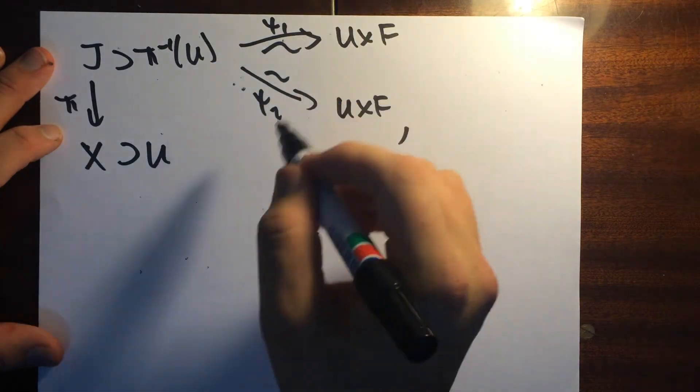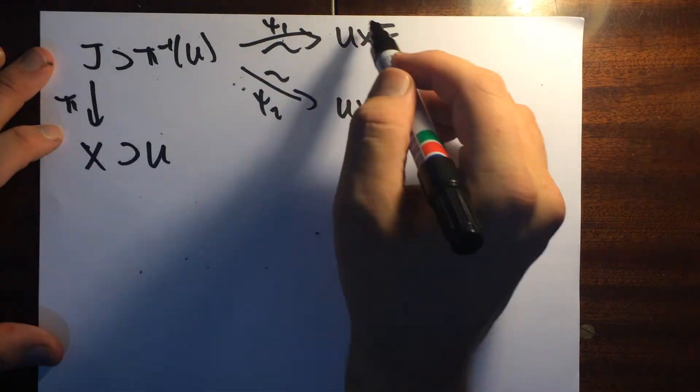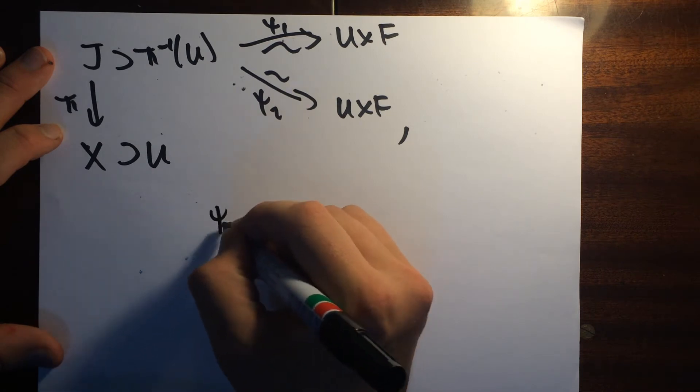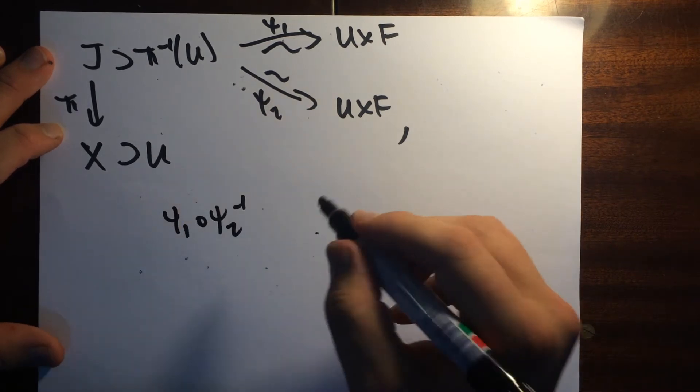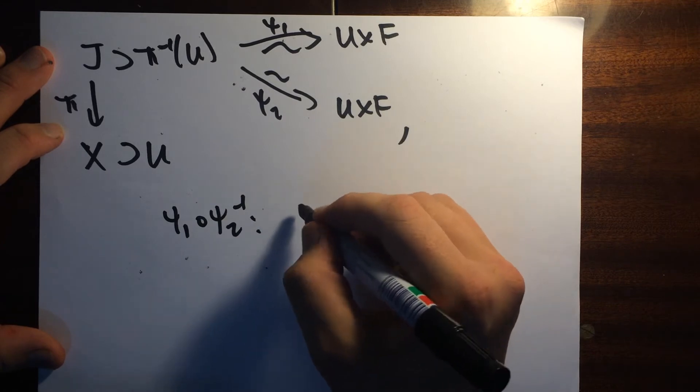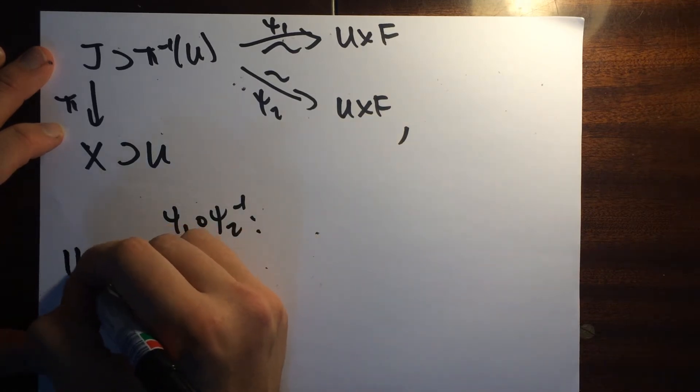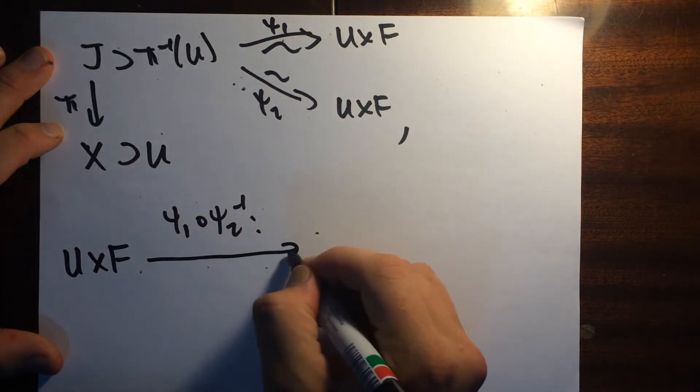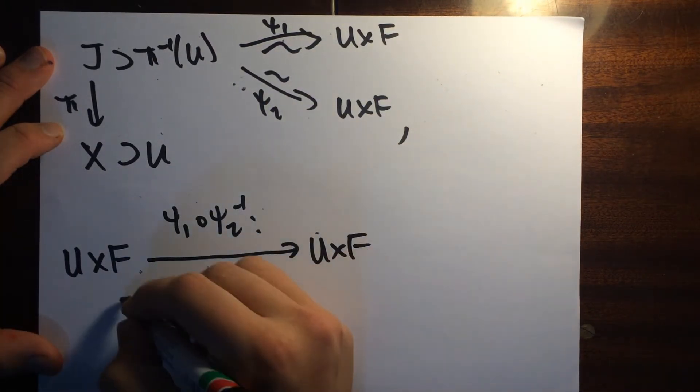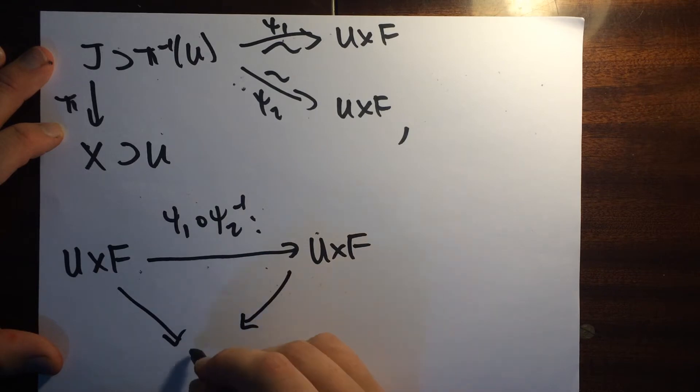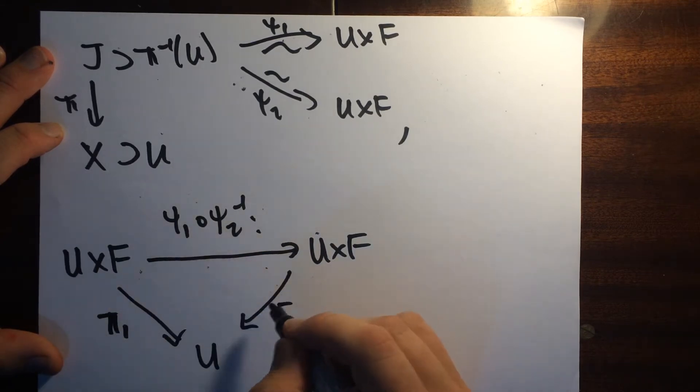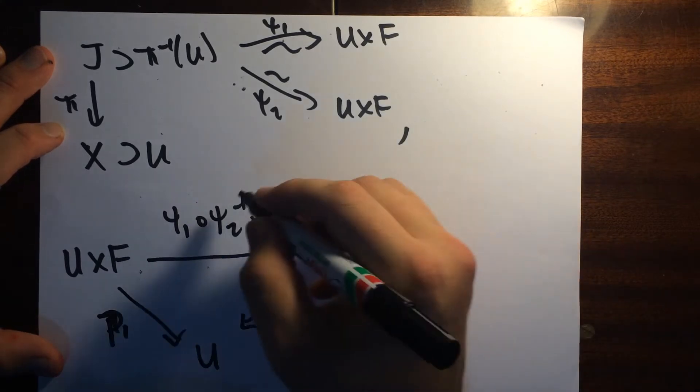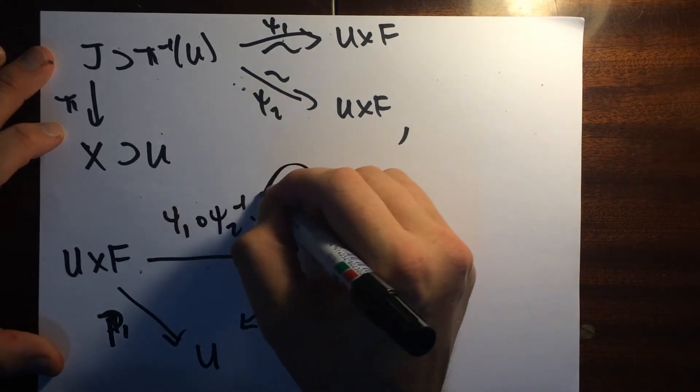What you can do given two of these things is you can transition between one trivialization. So this map Psi 2 inverse composed with Psi 1, this is a map from U cross F, it goes back here to another U cross F. And it respects this projection down here. This is PI1. This thing here is called the transition map.